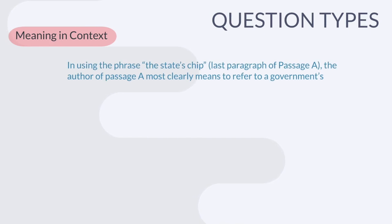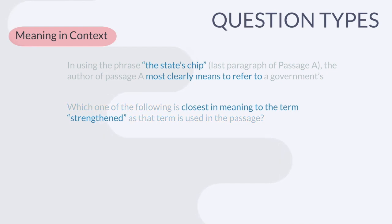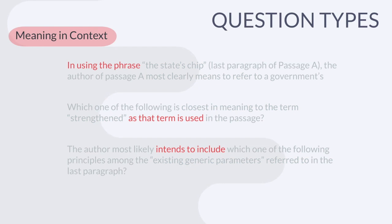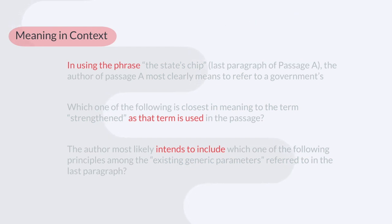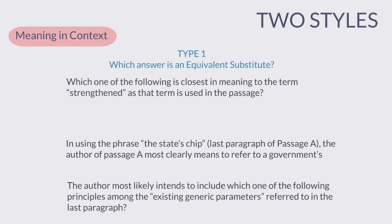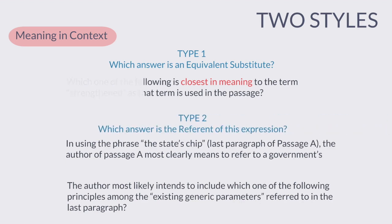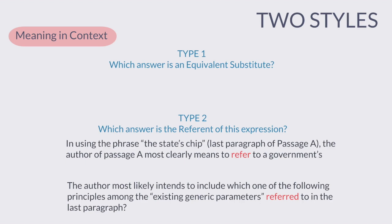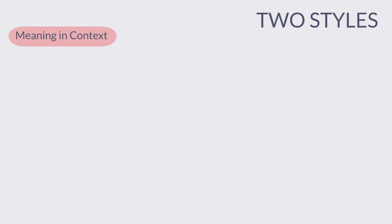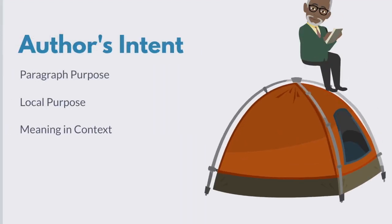Meaning in context is even more granular. It's saying what was this phrase referring to — the state's chip, what did the word 'strengthen' mean, or what was the author referring to when she said 'existing generic parameters'? There are technically two different styles: one asks which answer choice is basically a synonym, and the other asks when the author used this phrase, what was she referring to — what earlier point in the passage is this a callback to?